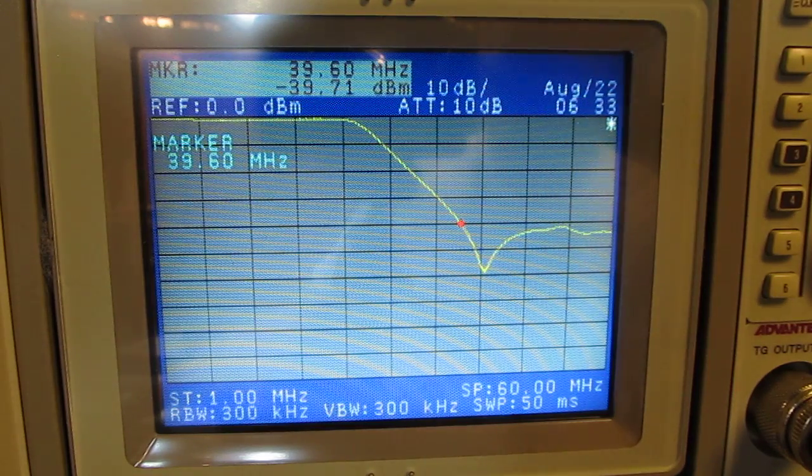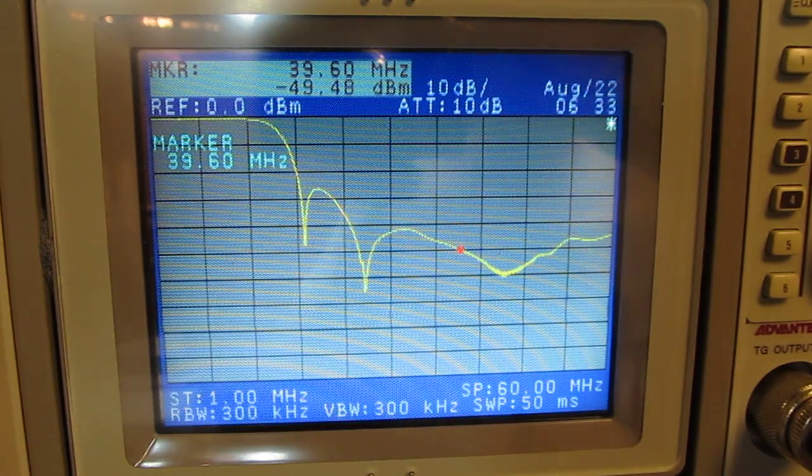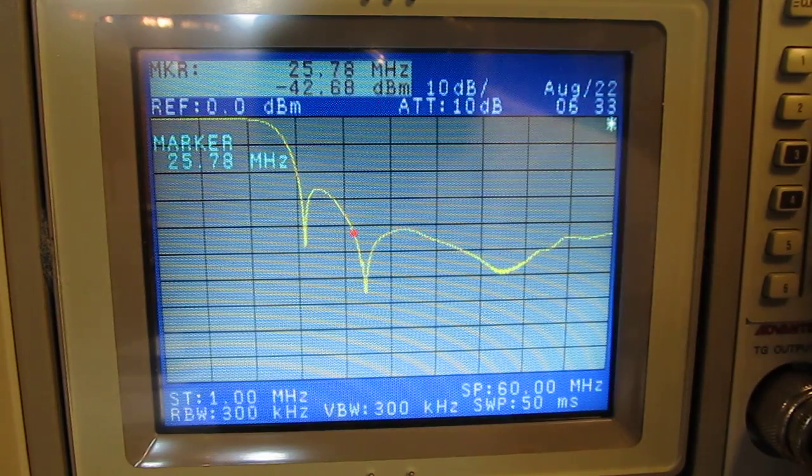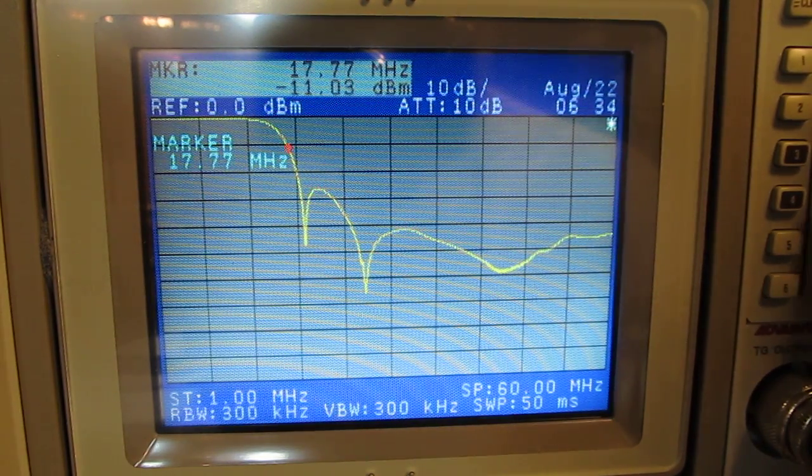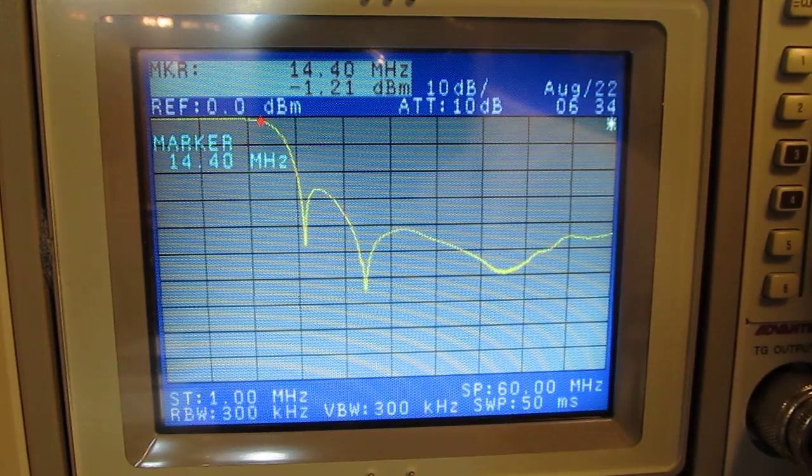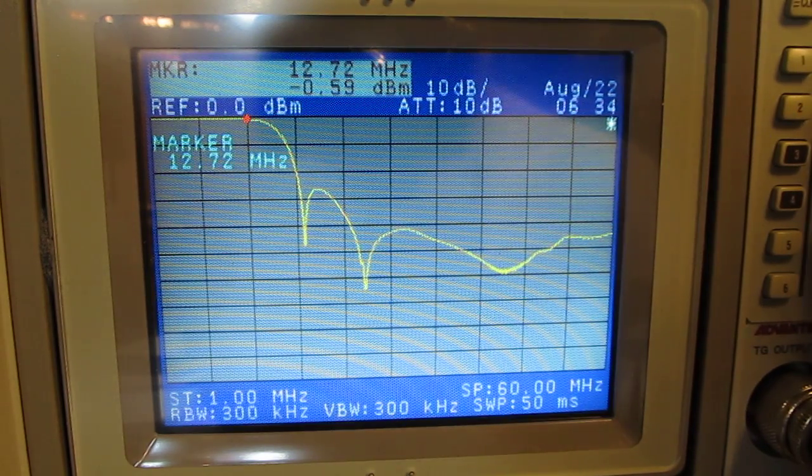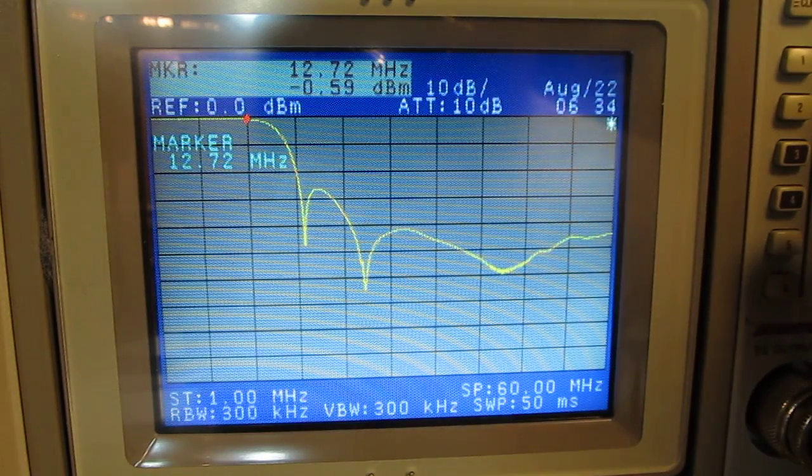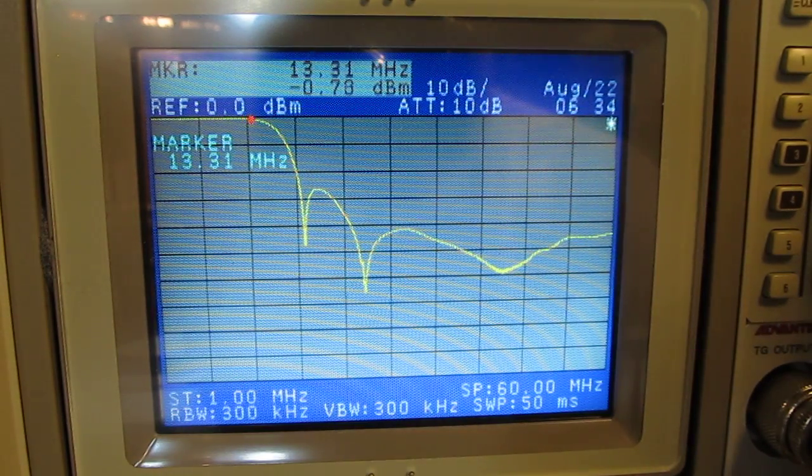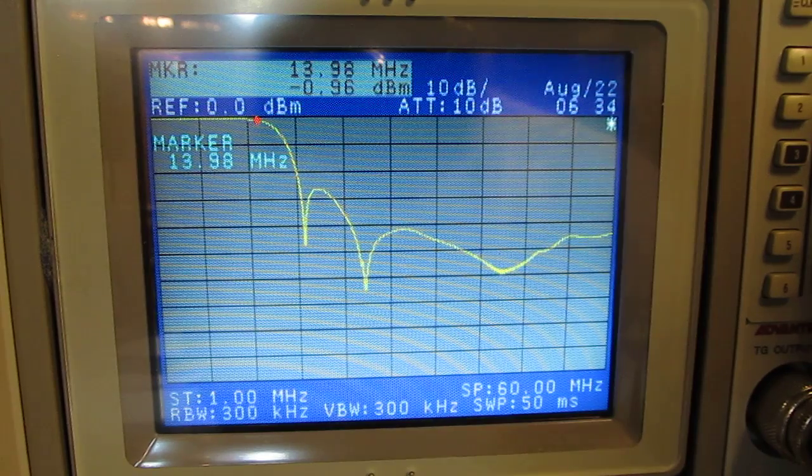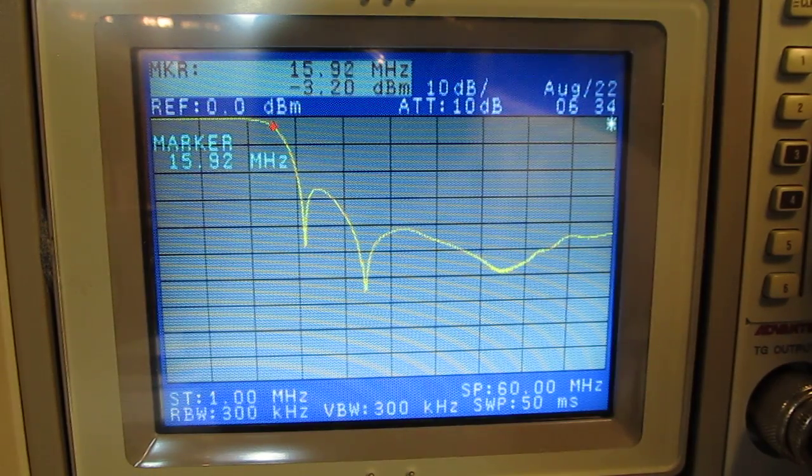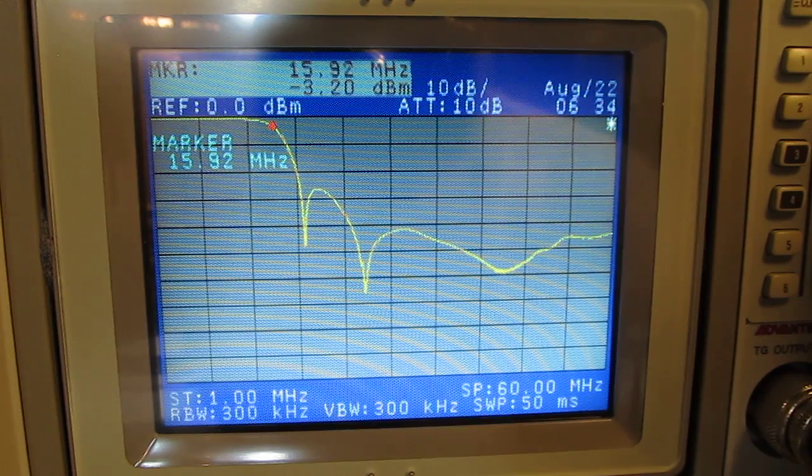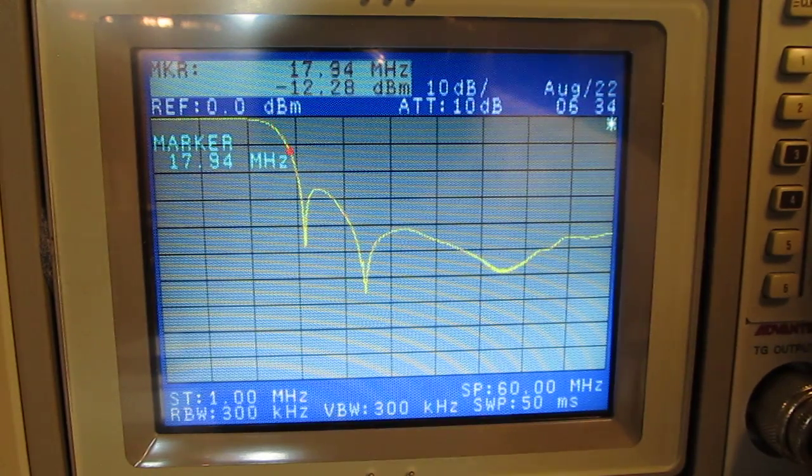The next filter is the 20 and 30 meter filter. This is a higher order filter so it's got some lobes in it. The highest frequency we're going to operate on here is 20 meters which is 14 megahertz so we're still nice and reasonably flat up there. Then we can see we're about 3 dB down at about 15-16 megahertz.